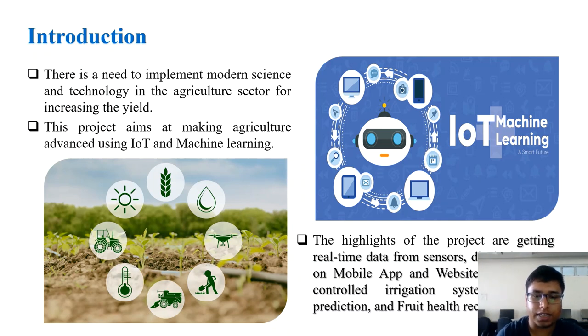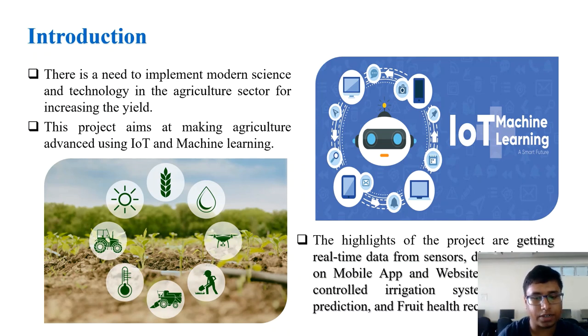This project makes agriculture more advanced using IoT and machine learning. The highlights of the project are: getting real-time data from sensors, mobile app and website, controlling irrigation systems, fruit recognition models, and rainfall predictions.